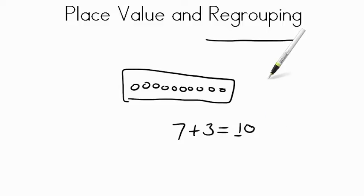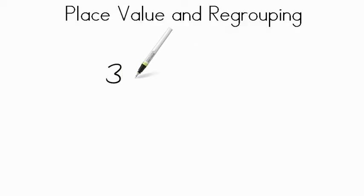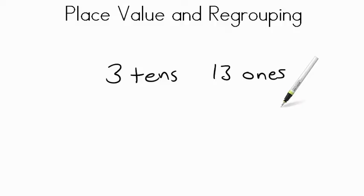So if we add some tens and some ones together, we might need to regroup to make them more tens and less ones. Let's take a look. Imagine we have 3 tens and we have 13 ones. Can we change that over so that we have more tens and less ones?